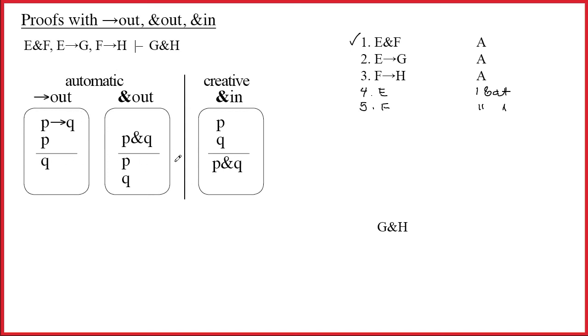That tells us that we're going to do arrow out. Notice if you look at these three rules, there's only one of them that even has an arrow in it, and so clearly if we're going to apply a rule, it's going to have to be arrow out. When I see the line, I say to myself, if I can find E on another line by itself, then I can write G.